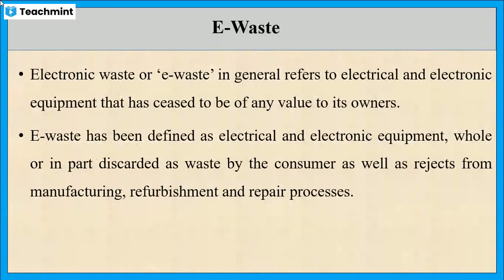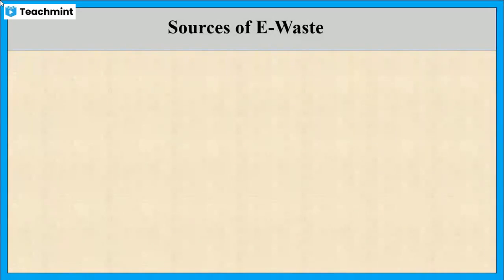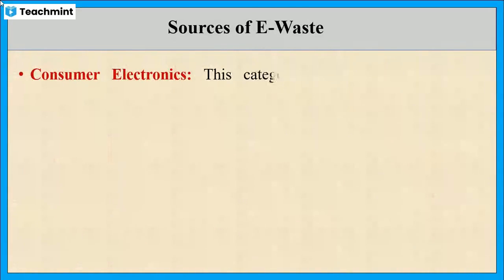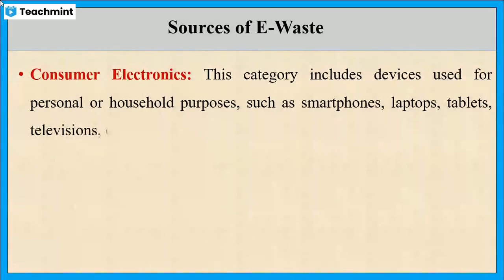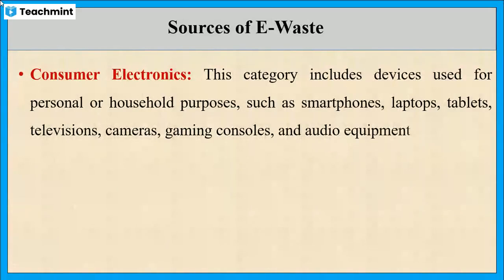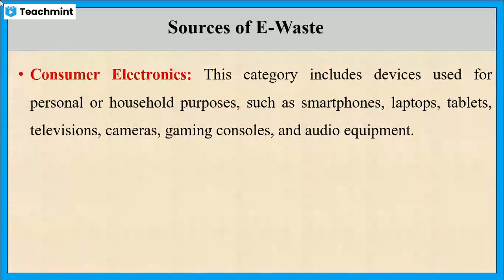Now let us see some of the sources of e-waste. The first one is consumer electronics, such as smartphones, laptops, televisions, and household appliances. As we know, the electronic device market is wide-ranging, and with new devices constantly emerging, it is common for consumers to replace their old used electronics with the newest versions. The constant replacement of devices creates large unwanted electronic products.